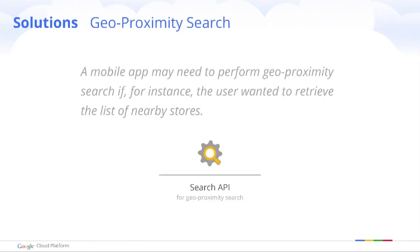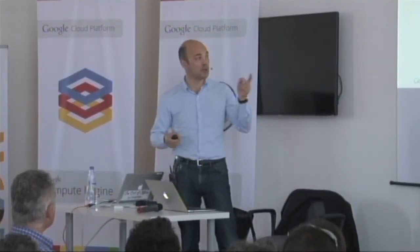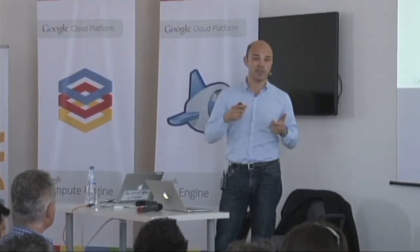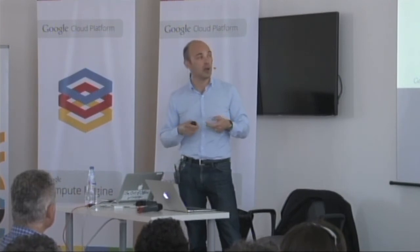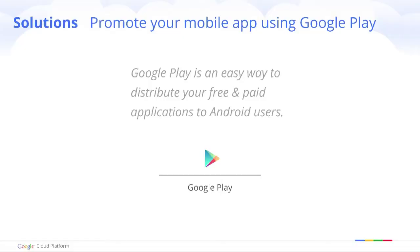More and more applications need to use geolocation, and of course we offer Google Maps with a search API that enables you to integrate maps into your mobile application. Another service that is part of Cloud Platform is Google Translate, which enables you to translate text very fast using an API — it's used by a lot of websites in travel, for instance. Google Play, which you all know, is very easy for delivering and monetizing your applications.